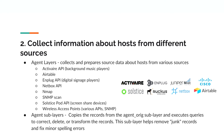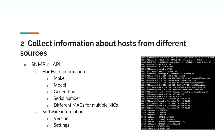Agent sublayers copies records from the agent original sublayer and executes queries to correct, delete, or transform the records to remove junk and fix spelling errors or abbreviations. When SNMP or API is used, some of the fields obtained include hardware information such as make, model, generation, serial number, and MAC address (including for other network interface cards present), and software information such as version and settings.